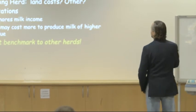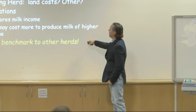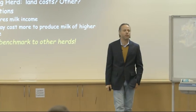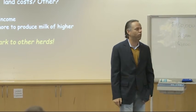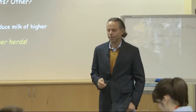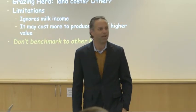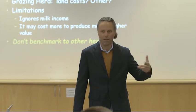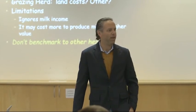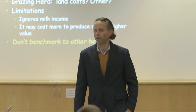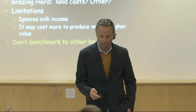So our limitations here: make sure we are ignoring milk income and certainly don't benchmark this number to other herds unless you're sure how it's calculated. Hopefully you've seen all the ways this can be miscalculated and misinterpreted. I literally see accountants in the U.S. lining up herds side-by-side on feed costs per liter and making terribly inappropriate conclusions, with people going out and changing their ration for no good reason whatsoever.